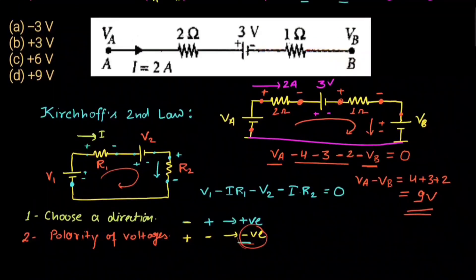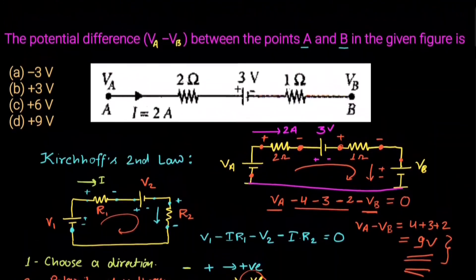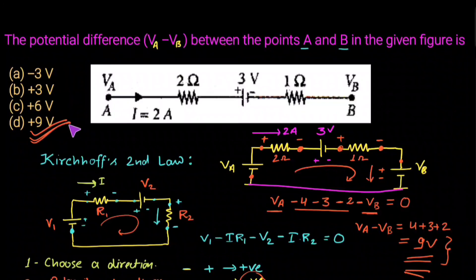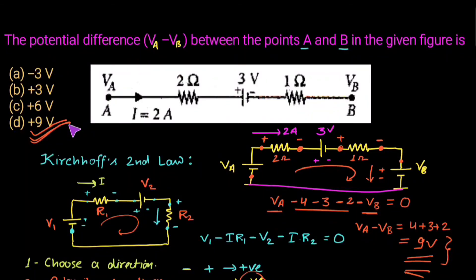So the potential difference V_A minus V_B equals 9 volts. Matching this with the given options, option D is the correct answer. Thank you for watching. If you have any doubts, please let me know in the comment section, and don't forget to subscribe to our channel Doubt Forum. See you in the next video — take care, bye bye.